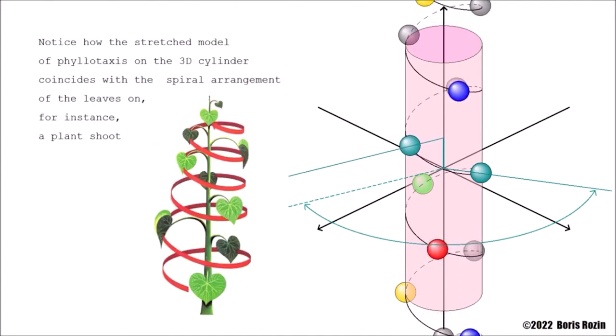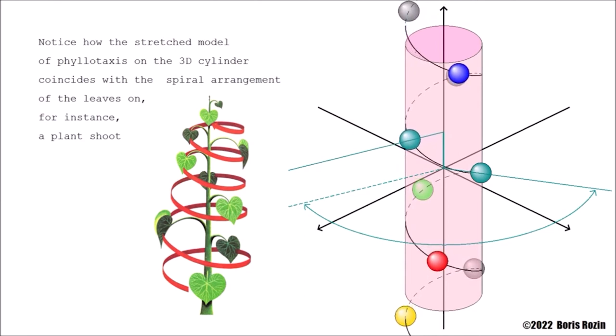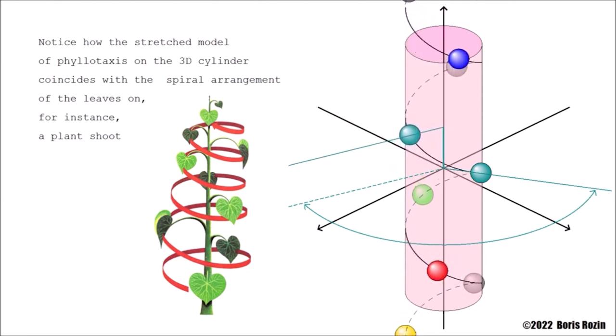Notice how the stretched model of phyllotaxis on the 3D cylinder coincides with the spiral arrangement of leaves on, for instance, a plant shoot.